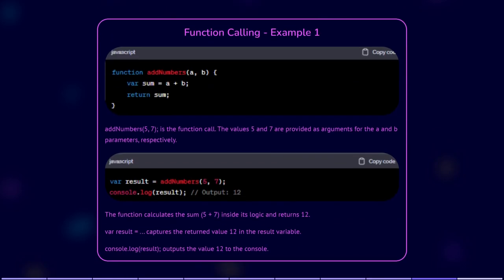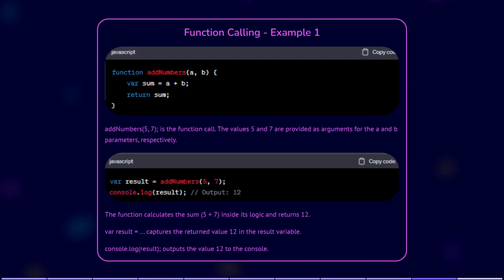In this example, addNumbers(5, 7) is the function call. The values 5 and 7 are provided as arguments for the a and b parameters, respectively. The function calculates the sum of 5 plus 7 inside its logic, and returns 12. Var result captures the returned value 12 in the result variable. Console.log(result) outputs the value 12 to the console.